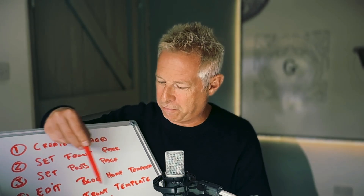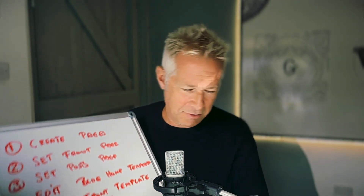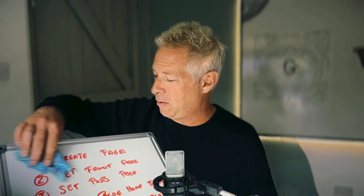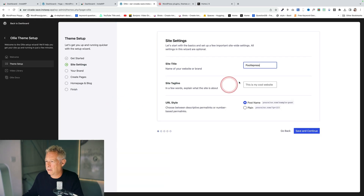Also, potentially, you have to create a new front page template. So there are five steps just to get the structure where you want it. But with the Oli theme and the new onboarding wizard, we can literally get rid of all those steps and get your site set up in about a minute. Let's see how easy this is with the Oli wizard — let's start it up.